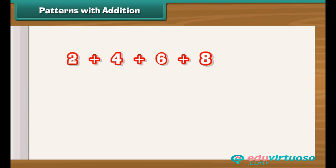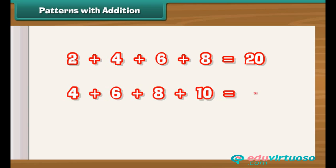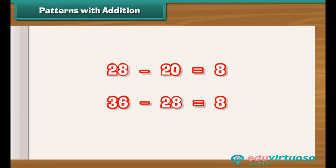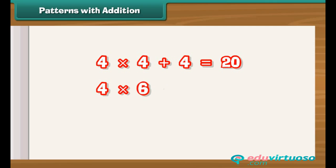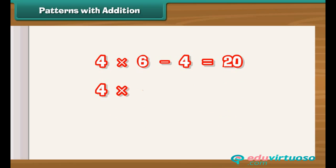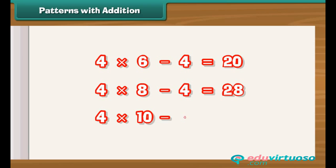Let us look at another addition pattern. 2 plus 4 plus 6 plus 8 is 20; 4 plus 6 plus 8 plus 10 is 28; 6 plus 8 plus 10 plus 12 is 36. The difference between any two adjacent sums is 8: 28 minus 20 is 8, and 36 minus 28 is 8. Each sum is also 4 more than 4 times the second term: 4 times 4 plus 4 is 20; 4 times 6 plus 4 is 28; 4 times 8 plus 4 is 36.